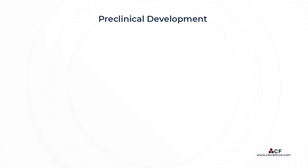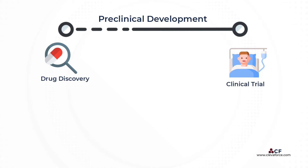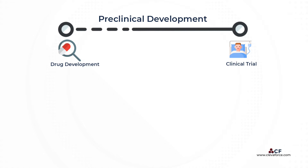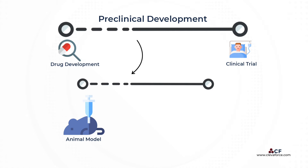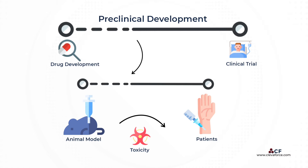Preclinical development encompasses activities that link drug discovery to the initiation of human clinical trials. The ultimate goals of preclinical studies are to accurately model in animals the desired biological effect of a drug in order to predict treatment outcome in patients — that is, efficacy — and to identify and characterize all toxicities associated with a drug in order to predict adverse events in people for safety and informed risk assessment.